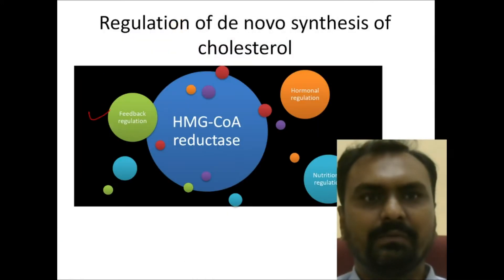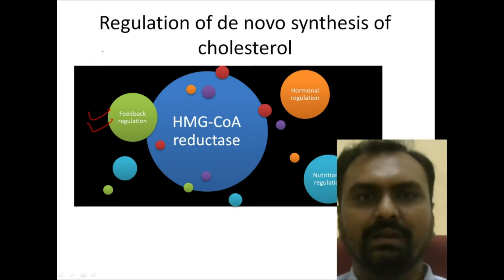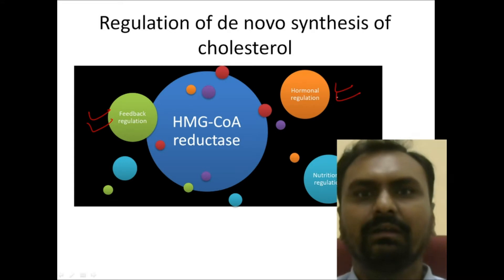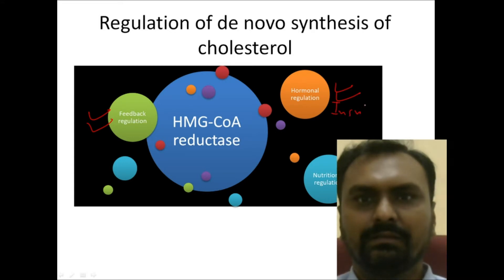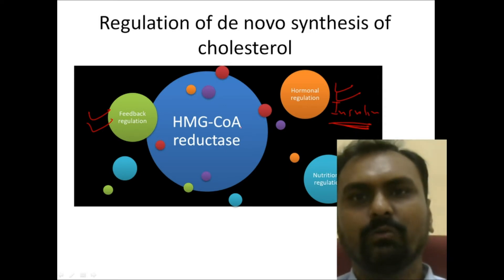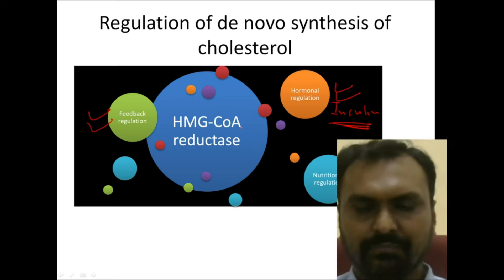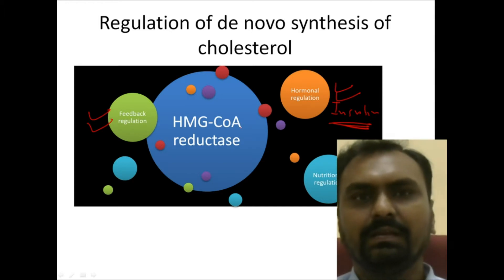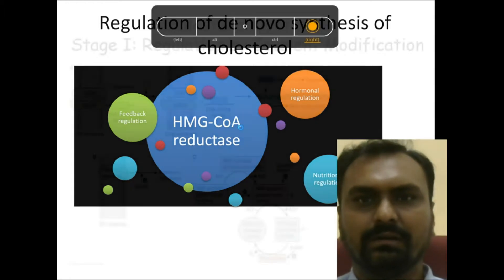HMG-CoA reductase can be regulated by feedback regulation — mevalonate and cholesterol will inhibit HMG-CoA reductase. It can also be regulated at the hormonal level. Insulin promotes the dephosphorylated form of HMG-CoA reductase and helps in cholesterol biosynthesis, while glucagon will inhibit cholesterol biosynthesis by inhibiting HMG-CoA reductase.